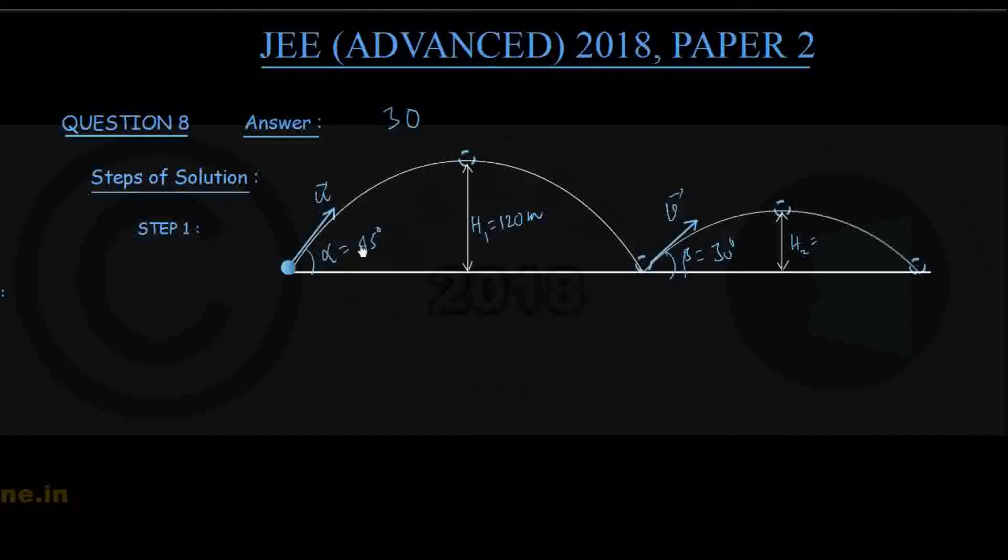And you can see here we have assumed the initial speed and speed after the bounce to be u and v respectively. Angles of projection known. Initial or the first flight maximum height is known. The question is to find out the maximum height reached after the bounce, that is H2. This is the question.